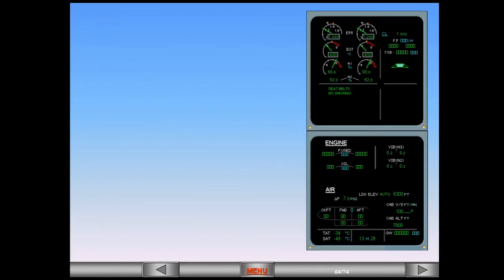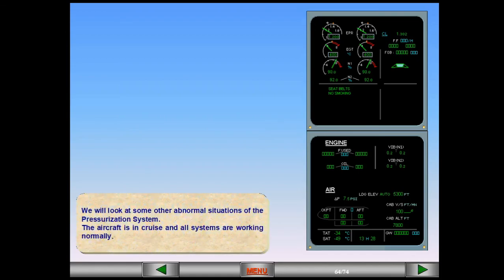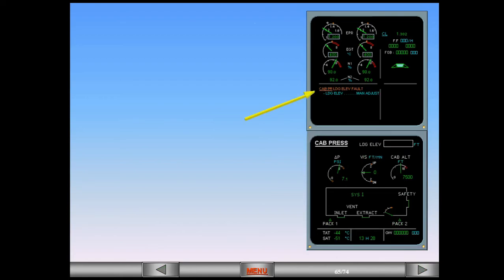We will look at some other abnormal situations of the pressurization system. The aircraft is in cruise and all systems are working normally. The caution, landing elevation fault, is telling you that the pressurization system has, for some reason, lost the landing elevation data normally supplied by the FMGS. Notice that the landing elevation details on the system page are blank.